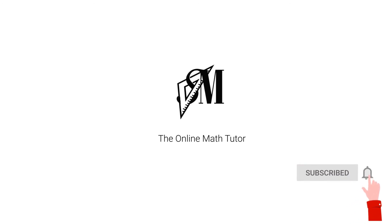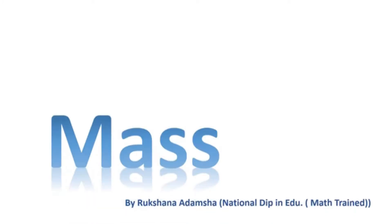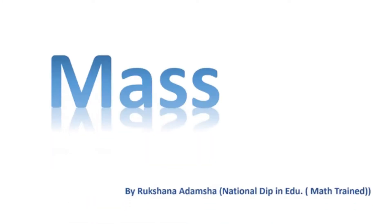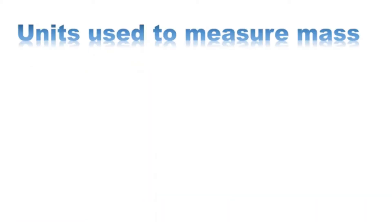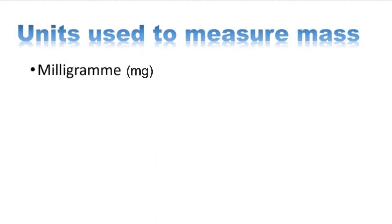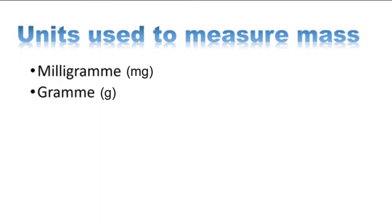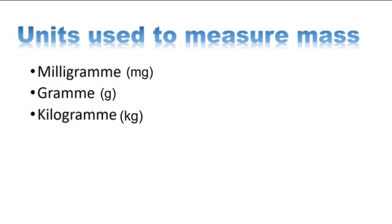Hi everyone, welcome to Smart Math Online Tutor. Through this video I'm going to tell you about mass. First of all, let us recall the units used to measure mass. Milligram is one of the smallest units we use to measure mass, then we use grams, kilograms, and in Grade 8 you are going to learn a new unit — that is metric tons. Within brackets I have mentioned the symbols of each unit.